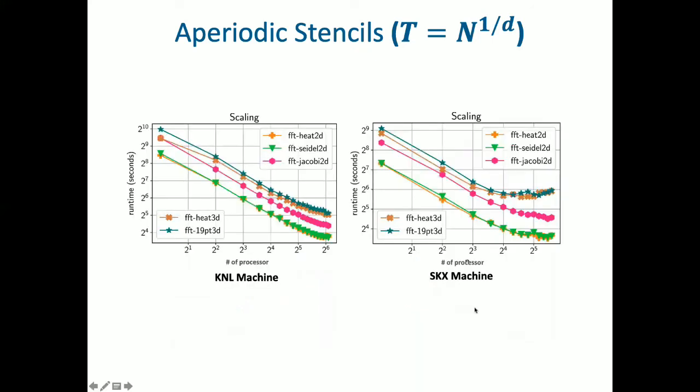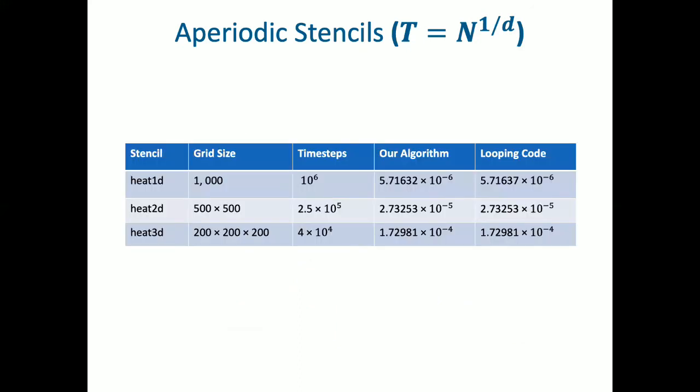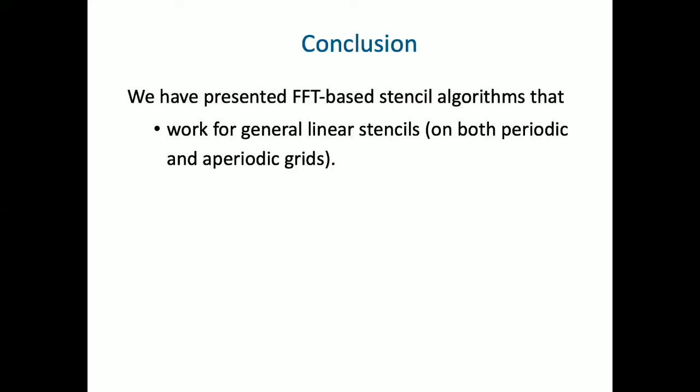Here we show the scalability plots of our algorithms. Our periodic algorithms are also highly scalable for both of the machine architectures. One of the main concerns while dealing with floating point values in stencil computation is the numerical accuracy over time. The experimental result shows that our algorithm has no worse floating point accuracy than any of the looping-based code. That means we get better runtime, but no loss in the accuracy.